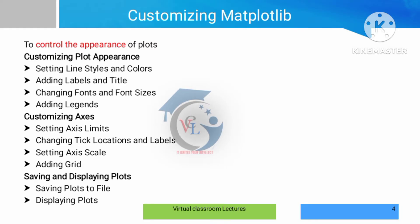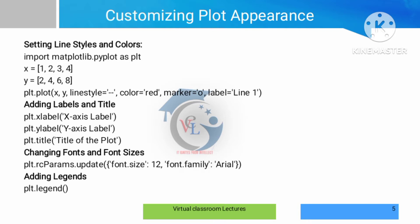For customizing plot appearance, the first step is setting line styles and colors using code such as: plt.plot(x, y, linestyle='--', color='red', marker='o', label='line1'). We can also update font settings using rcParams.update with font size and font family. Next, we add legends using plt.legend() to display the legend on the plot.